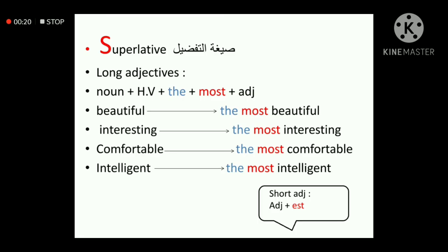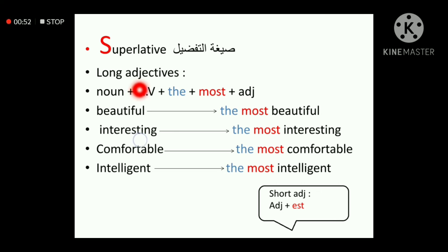Let's talk about صيغة التفضيل — we'll talk a bit about the superlative form, but today with long adjectives. We remember that with short adjectives, we add 'est' to the short adjective — for example, 'tall' becomes 'the tallest.' But here with long adjectives — adjectives with more than one syllable — we add something different.